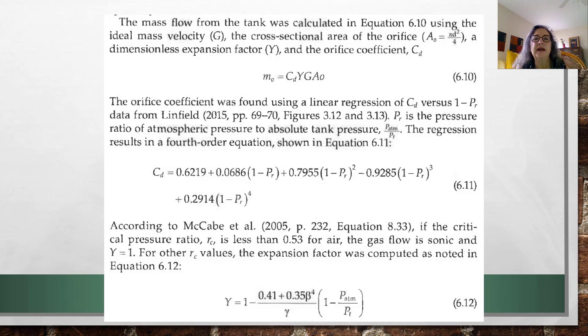A sub naught is the area of the orifice. The diameter of the orifice is given, I believe it is 1.32 millimeters, but it's also given in the handout. And C sub D is fit to data, and this is a very good correlation.